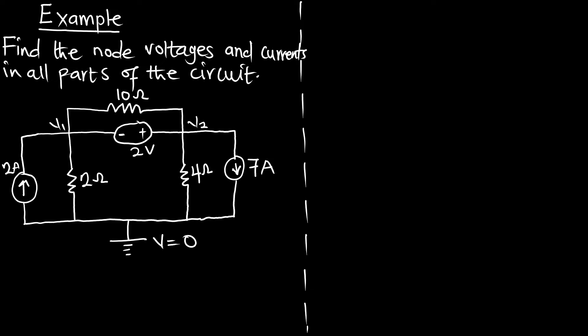Since there are currents, we are going to assign current to the branches. This 2-ampere current is coming and it is going to split itself here as I1. Remember, in any branch that has a voltage source, we are not going to assign current because this current is going to help us write an expression in terms of voltage. This branch is already having a voltage source so we cannot assign current to it. I'll assign current here as I2. As I2 comes, it is going to split itself here as I3. And this part is already having a current of 7 amperes.